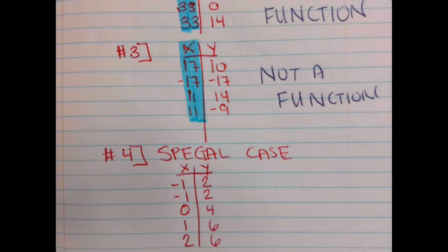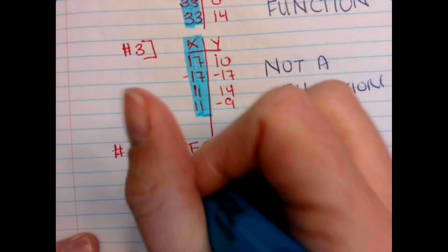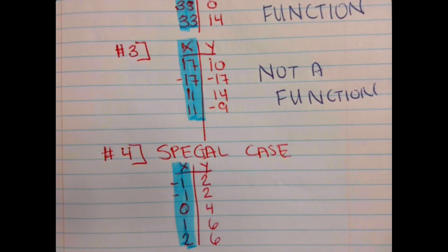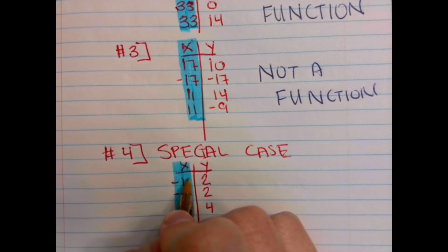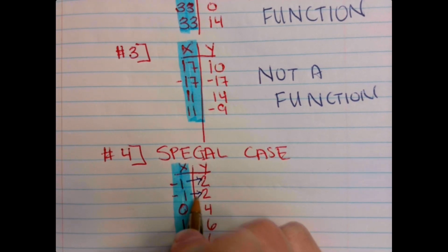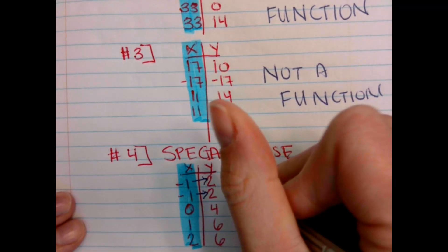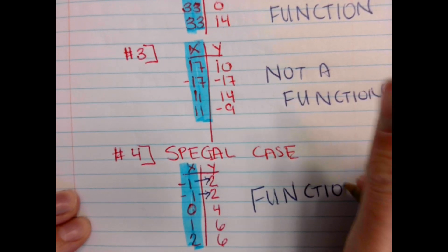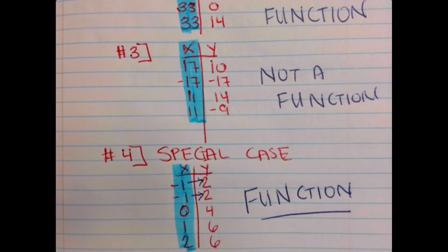On the left side, look at your domain. Some of you are going to say, well, that's not a function, I have numbers that repeat. But look at, they both go to the same number, so they are the same exact point. This is why it is a special case, because this is actually a function.